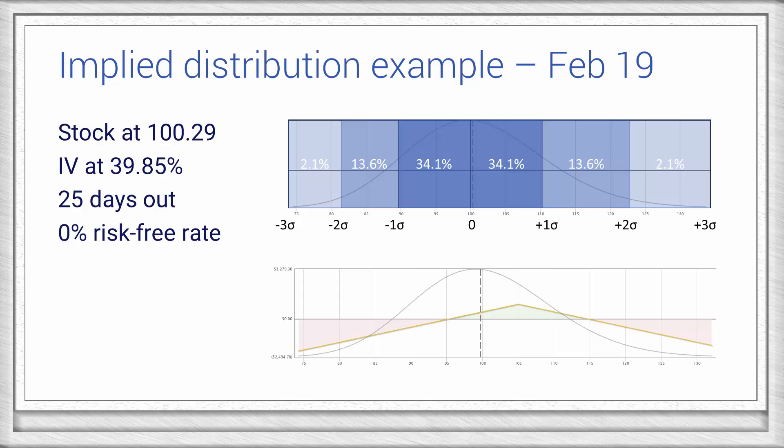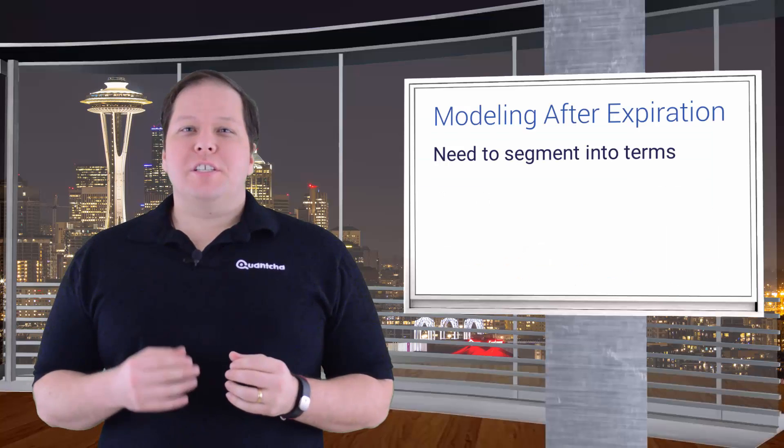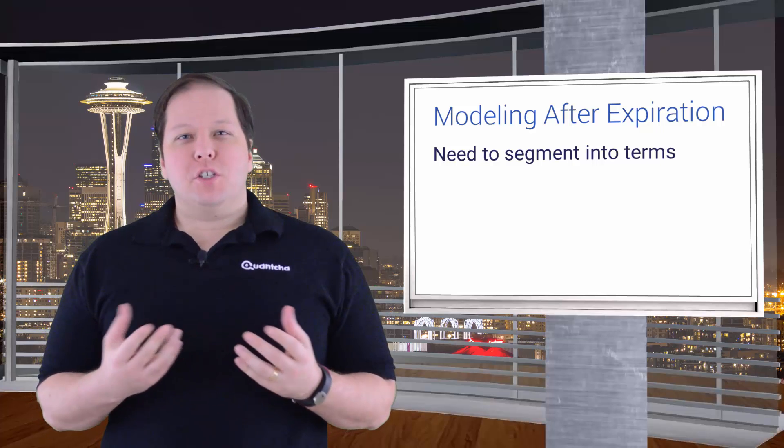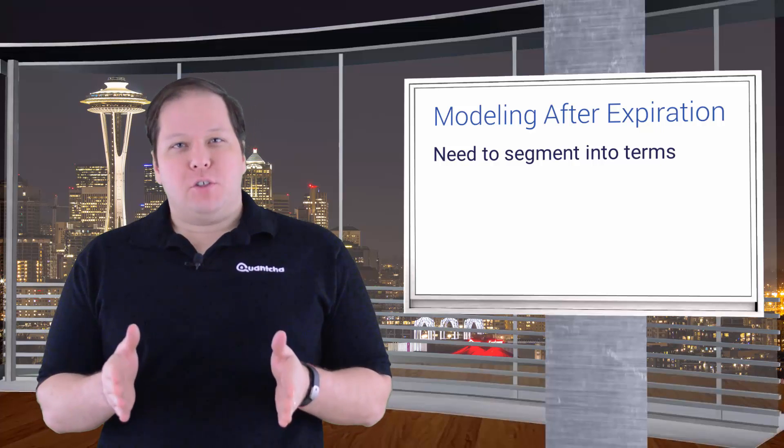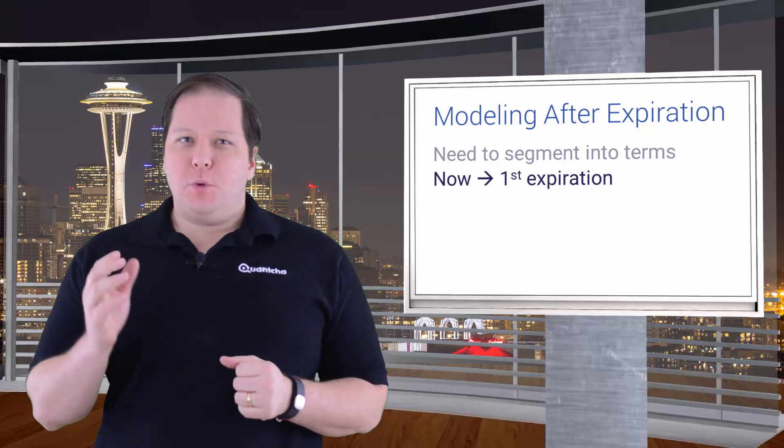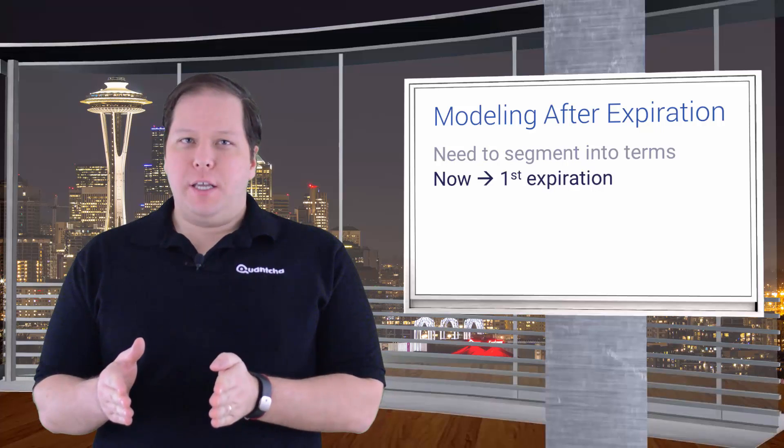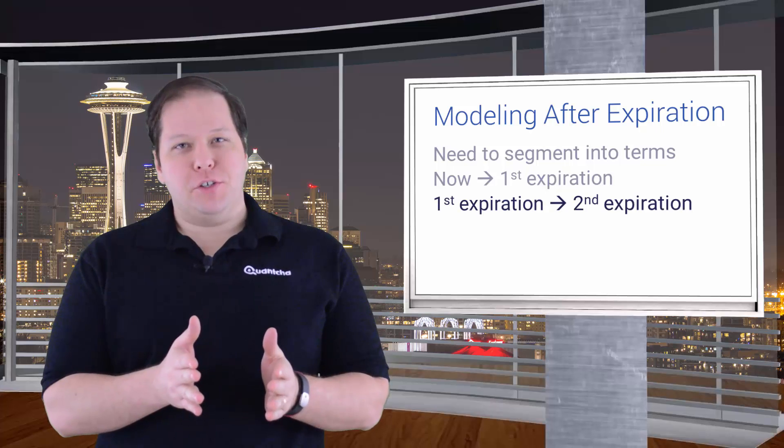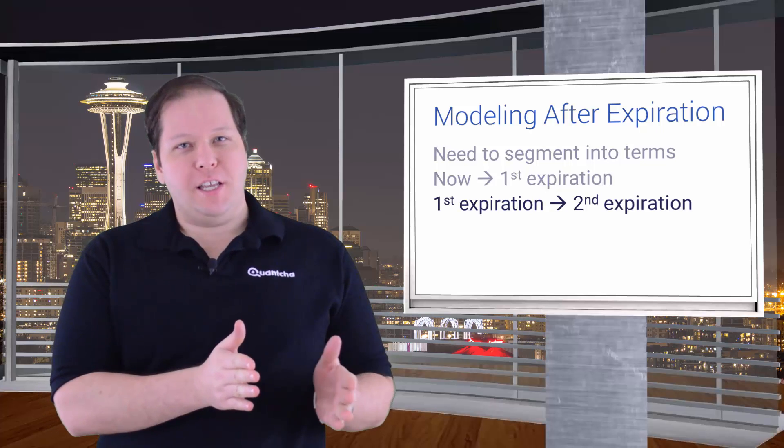But what happens when we want to evaluate a range of terminal prices on a date that occurs after some of our options are set to expire? How do we select statistically feasible price paths? The solution here is to segment the duration of the term into smaller terms that lie between the milestone dates. The first term is between now and the first option expiration date. The next will be between the first and the second expirations, and so on until we reach the target date.